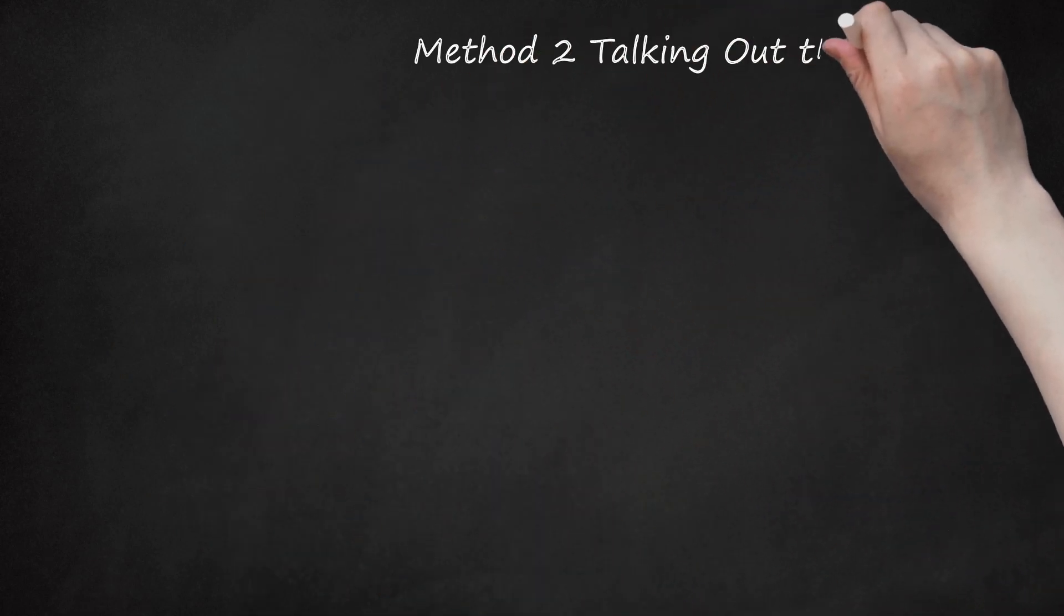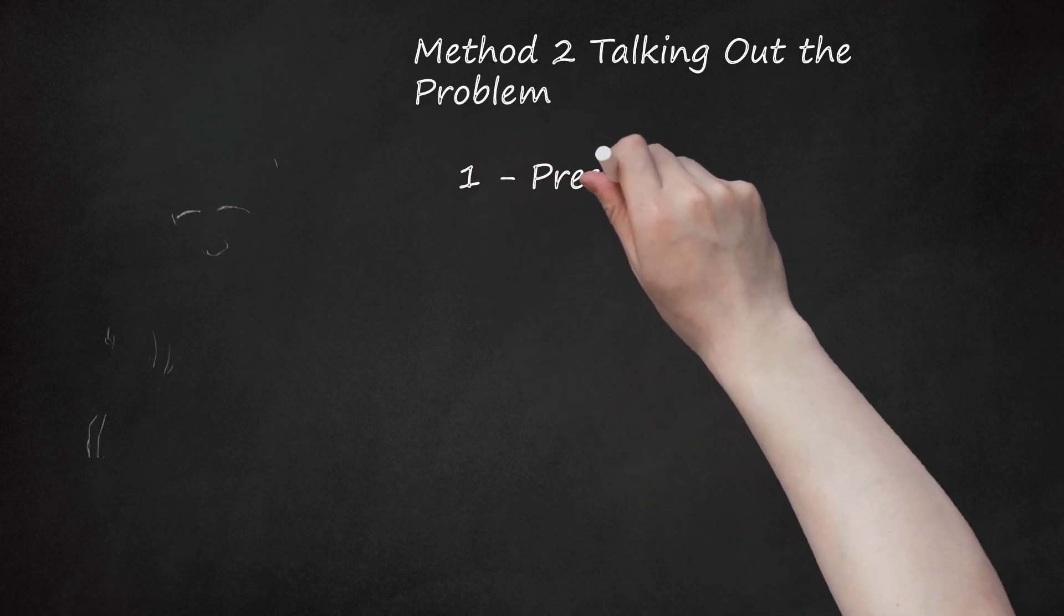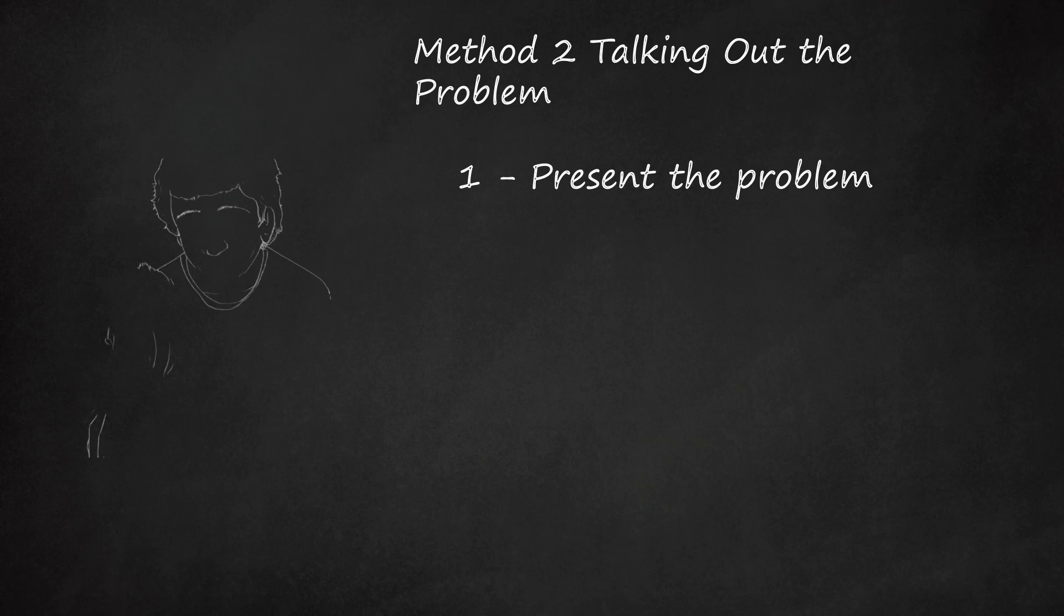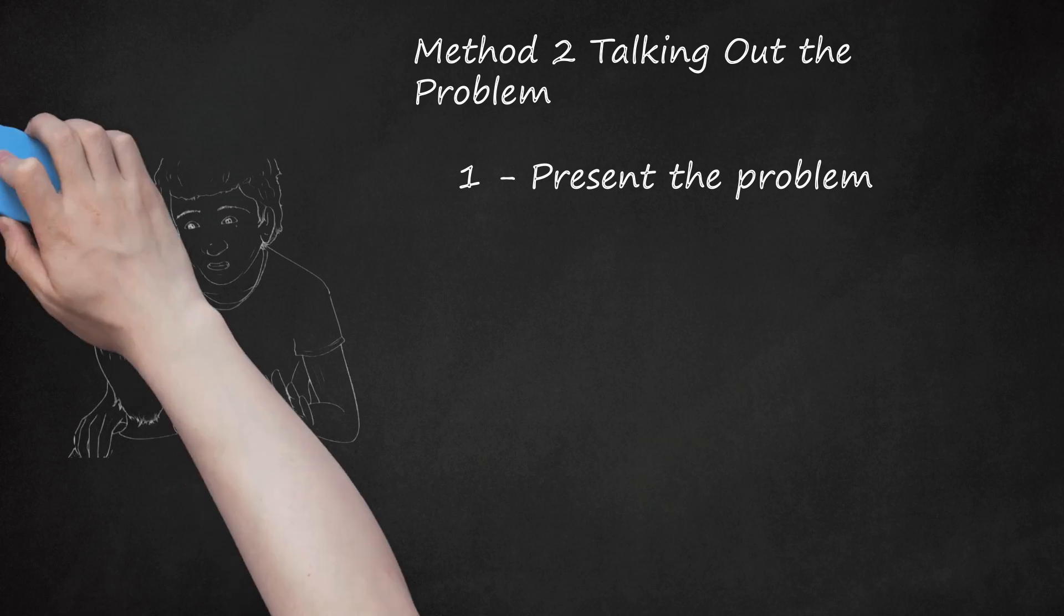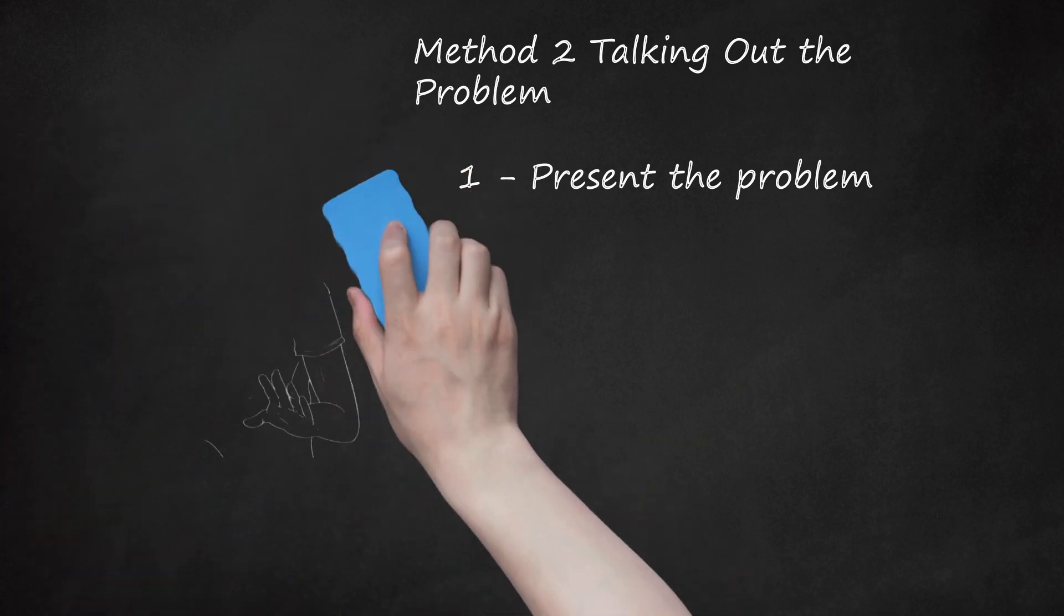Method 2: Talking Out the Problem. 1. Present the Problem. If you continually get into conflicts with your sibling, you might want to address the problem. Start by stating the obvious. That is, what's bothering you about the situation and why. It's important to address your views and then give your sibling a chance to respond. After your sibling has been talking for a while, interrupt with something like, 'I don't like the way you're talking to me right now' or 'I feel like you're dominating this conversation.' Try to remain as calm as possible. Getting hostile and trying to yell over someone will only escalate the situation.